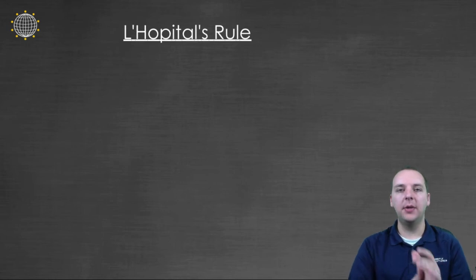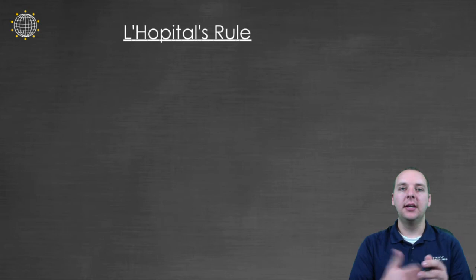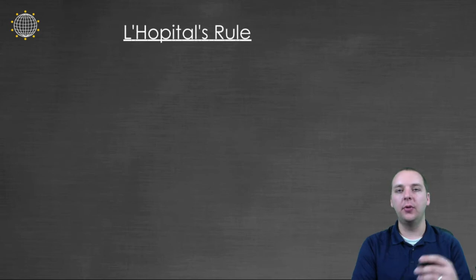A lot of times when we evaluate a limit we'll get 0/0 or ∞/∞. You've probably seen plenty of examples like this. Those types of limits yield what are known as indeterminate forms. Zero over zero is one indeterminate form, infinity over infinity is another.